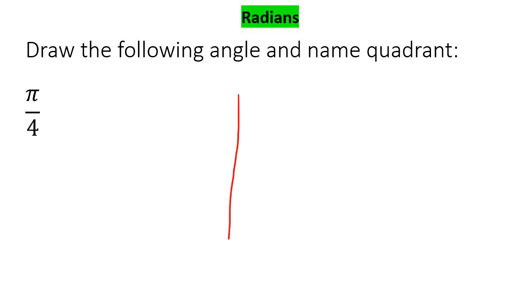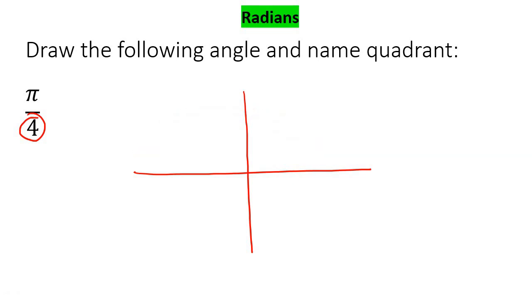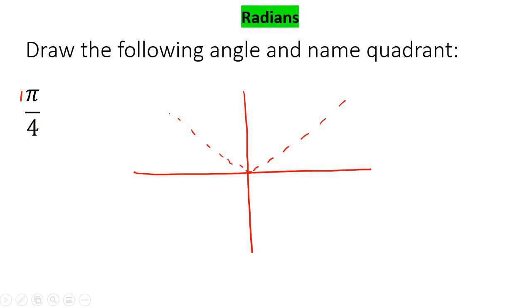So when you see this, what I want you to do is draw your x and y axes. Then I want you to realize that the number at the bottom is a 4, so I want you to break the top part into four equal parts. Now this is a 1 in the front, so it's one over four.